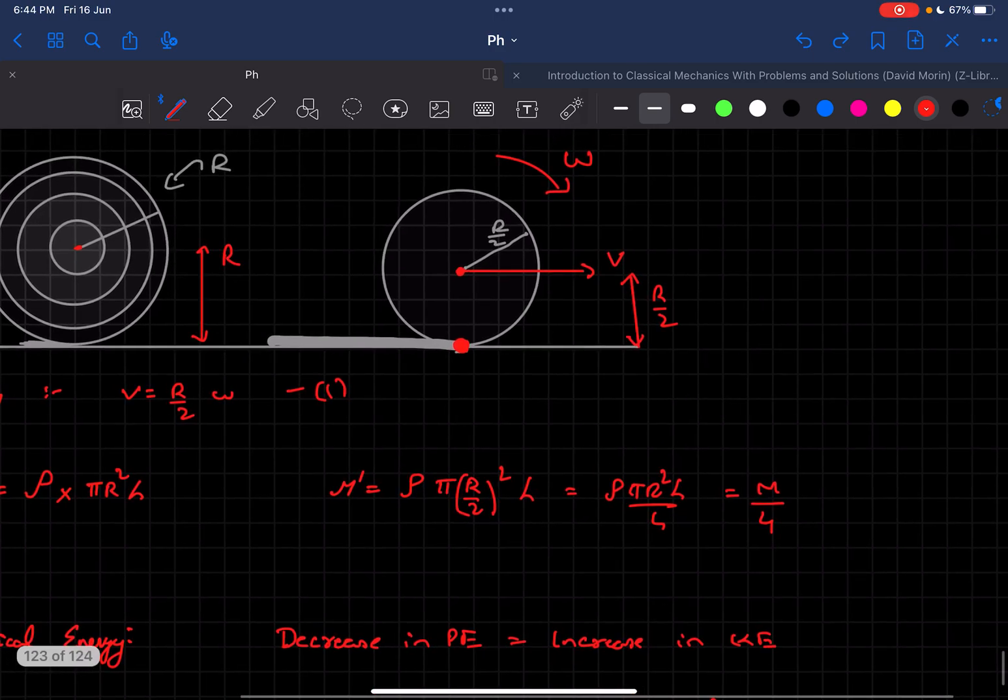I about instantaneous axis of rotation would be I about the center of mass plus the mass of the cylinder times the distance from the center squared.